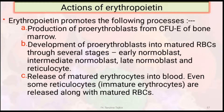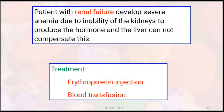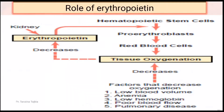What are the actions? First, production of erythroblasts. Secondly, development of proerythroblast into mature red blood cells through several stages. Thirdly, release of mature erythrocytes into the blood. In patients with renal failure, severe anemia develops due to the inability of the kidney to produce this hormone, and the liver cannot compensate. So patients with renal failure must be treated with erythropoietin injection and blood transfusion.